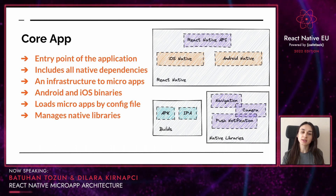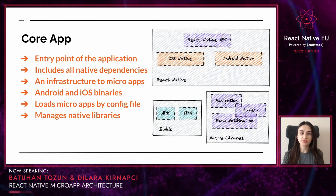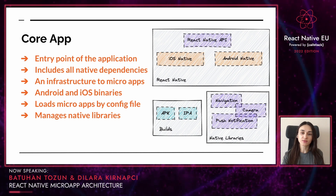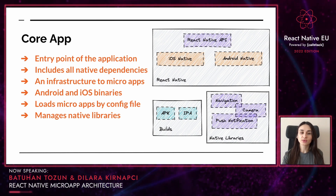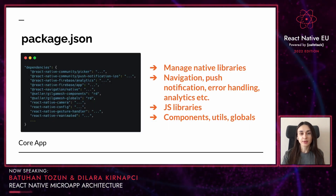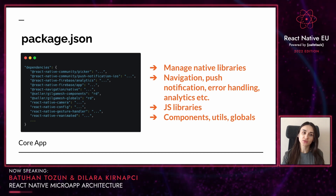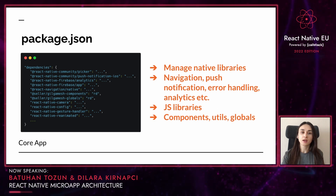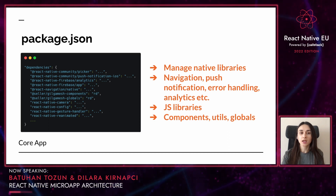The core app manages native libraries such as navigation, camera, push notification, and error handling. You can add any native and JavaScript libraries to the core app application and use them across microapps. If you look at the package.json of the core app application, you can see that all native libraries are managed. So you can decide on main libraries such as navigation, push notification, error handling, analytics, or whatever you want, add your JS libraries, and then add them as a dependency to the core app application.